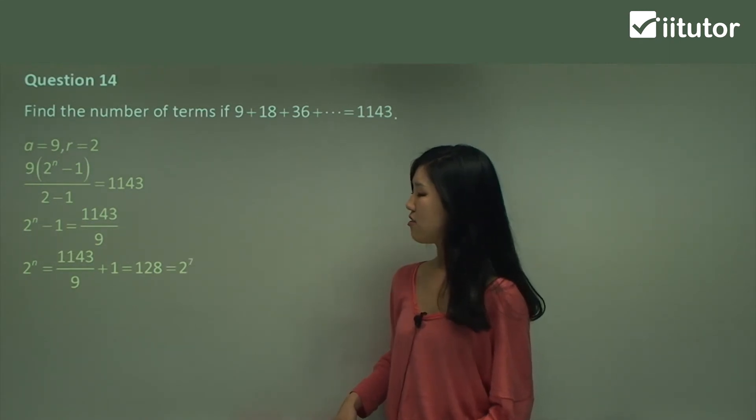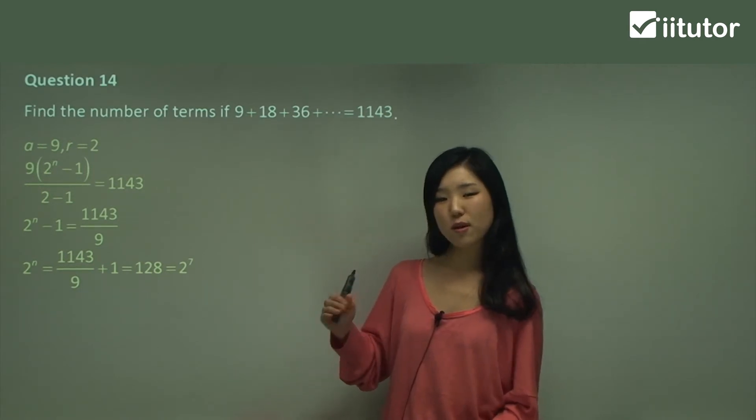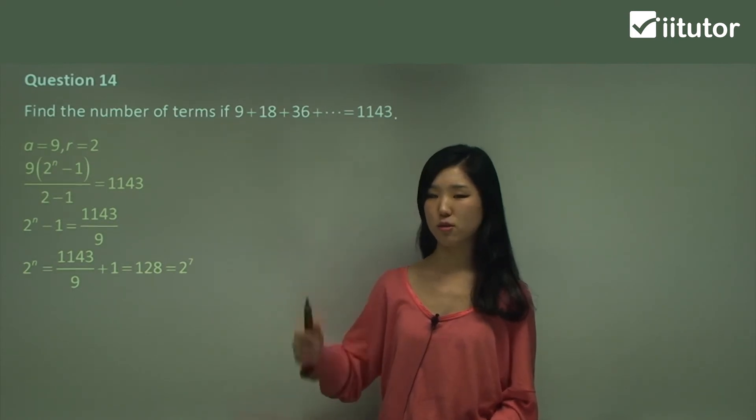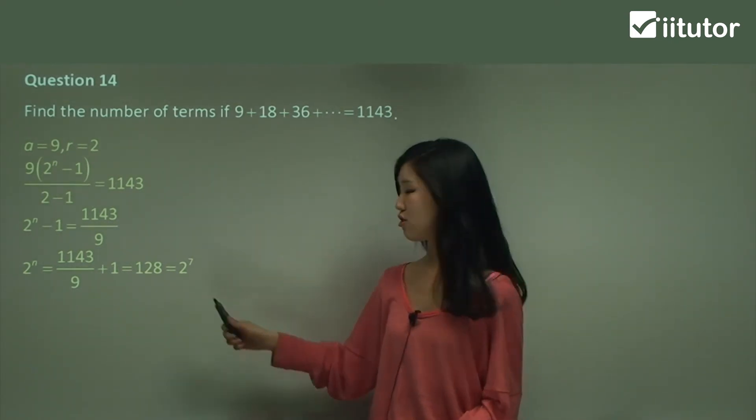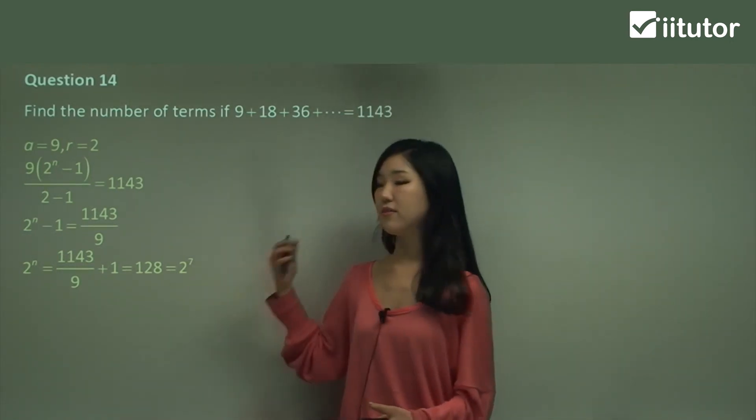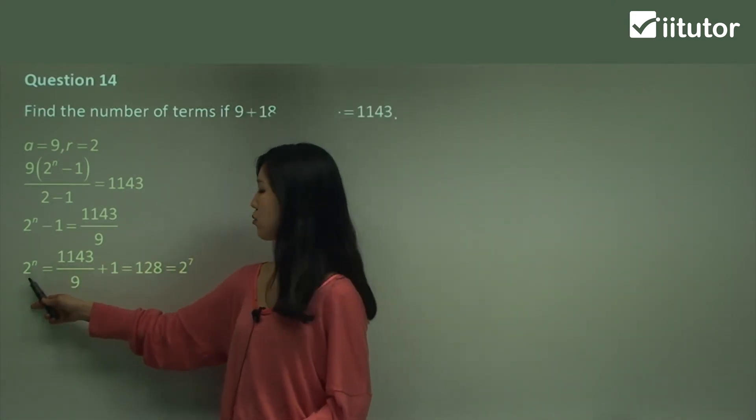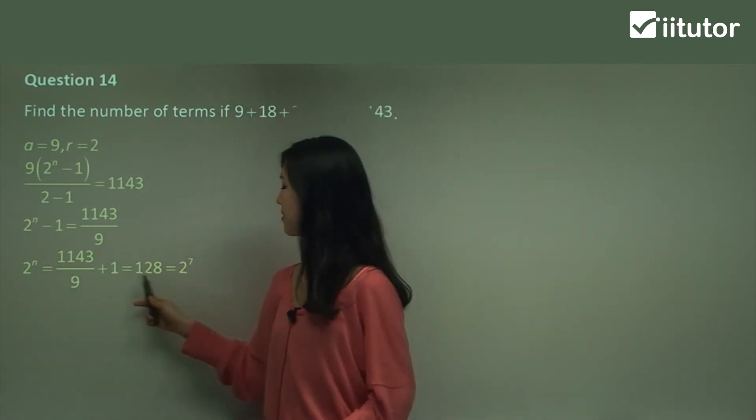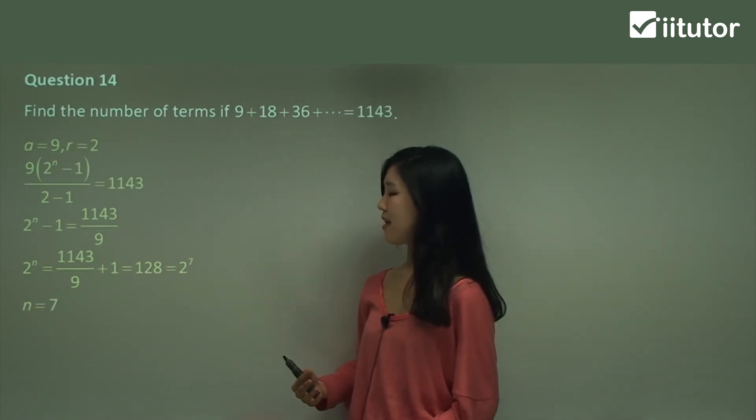Now guys, 128 is 2 to the power of 7, isn't it? I don't know, sometimes if you don't really know, just do some trial and error with your calculator. Just plug some numbers. Try 2 to the power of 6, 2 to the power of 8, or 2 to the power of 7. You should see that 2 to the power of 7 is 128. Now the reason why I want it to be 2 to the power of something is because the base of this is 2. So that's why I want this to be 2 to the power of something. So if the base is the same, that means the indices must also be the same. So therefore, n is 7.